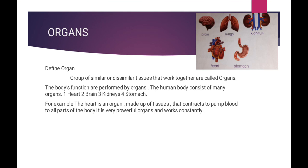Our next topic is organs (aaza). You know that inside our body there are many organs, such as the heart, brain, lungs, liver, and kidneys. A group of similar or dissimilar tissues that work together is called an organ. Cells form tissues, and tissues form organs. The body's functions are performed by its organs – hamaari body ke functions tab hi perform hote hain jab hamare organs kaam karte hain.